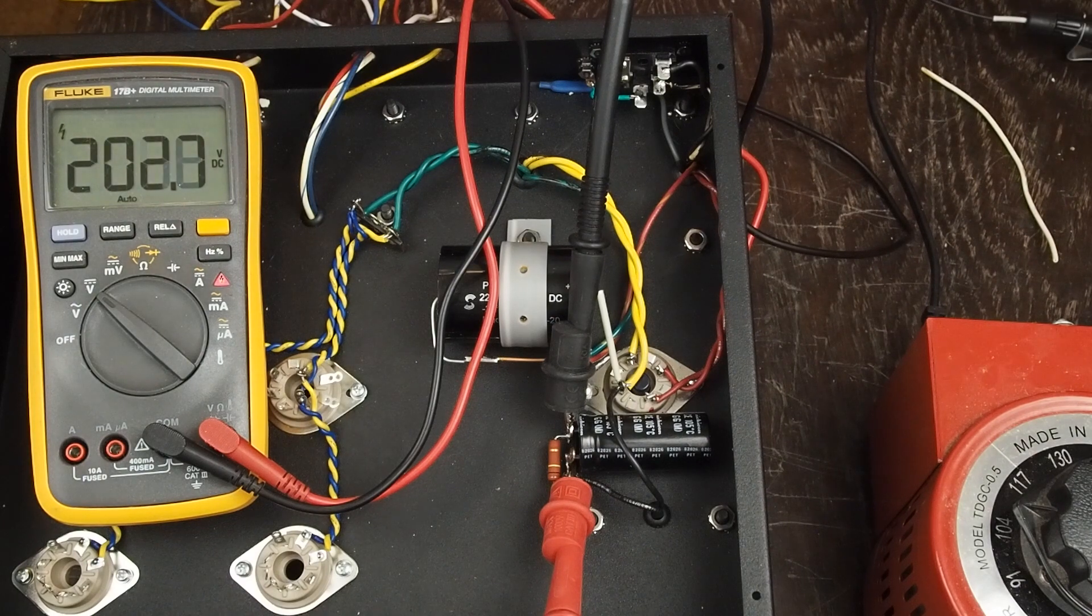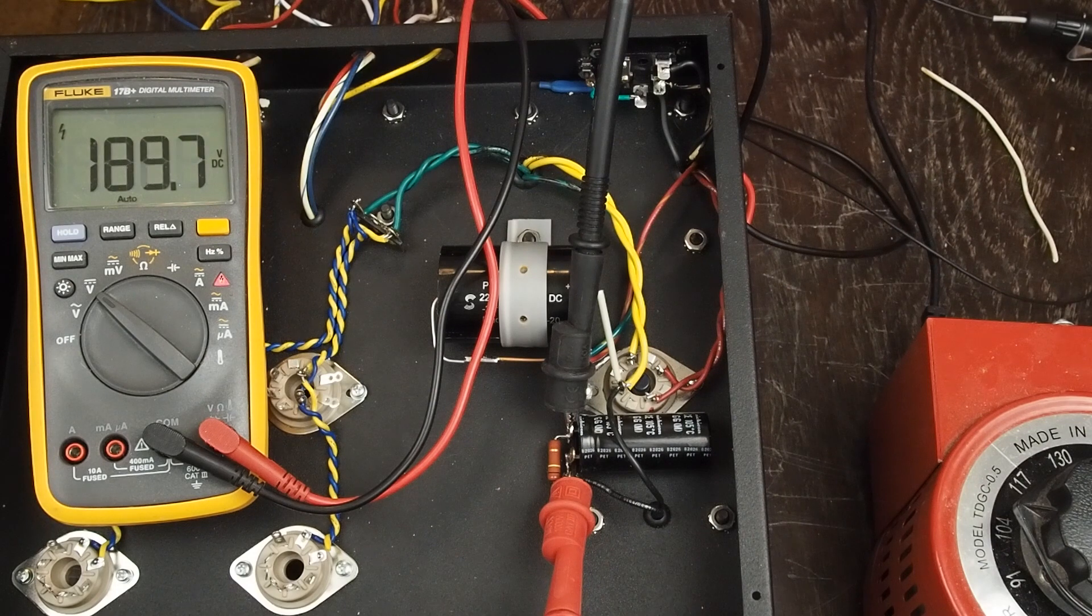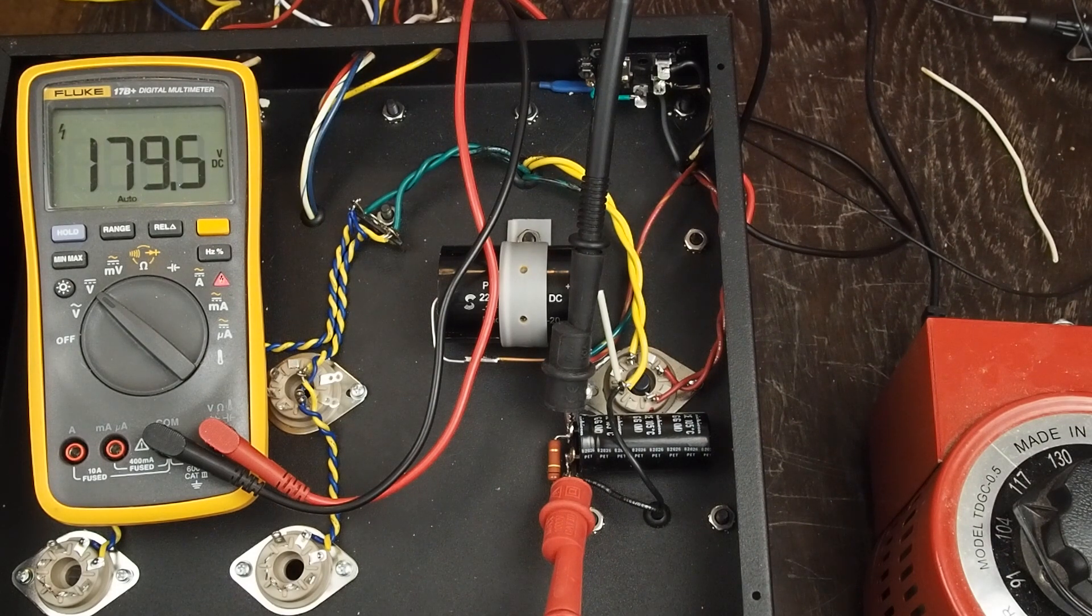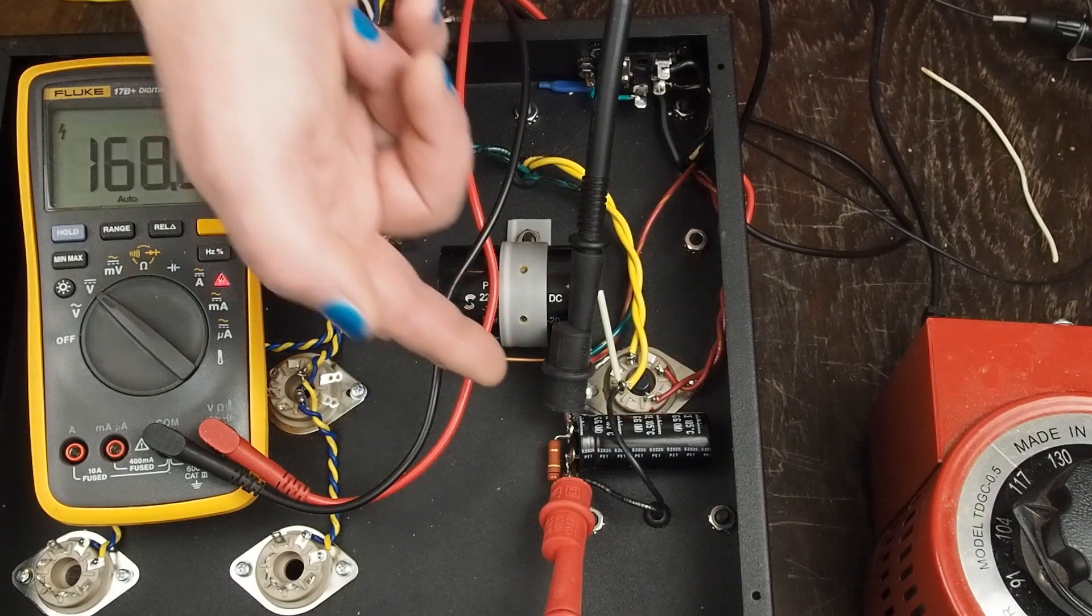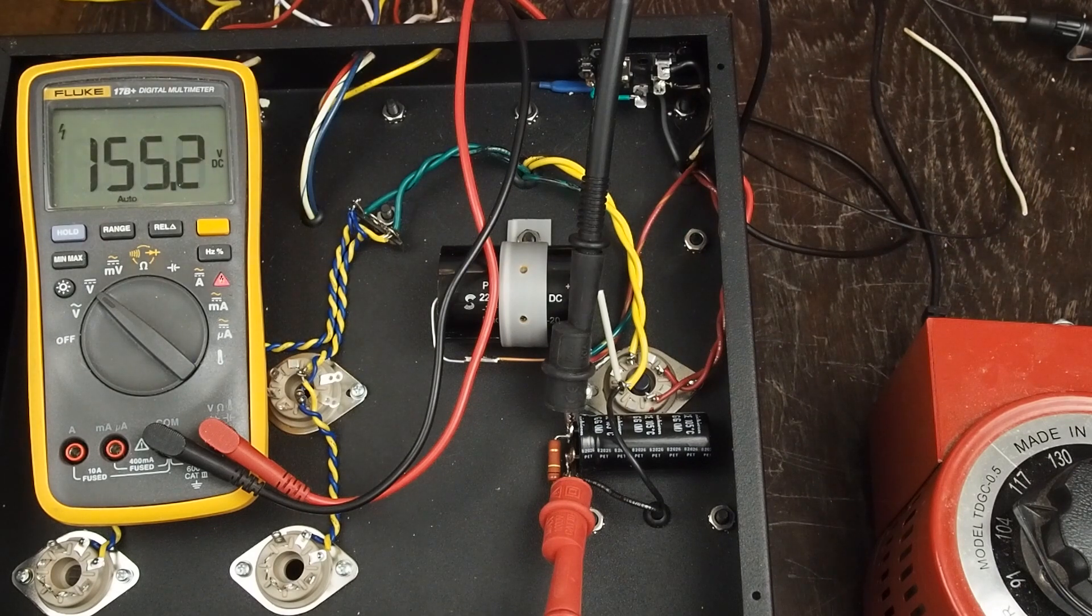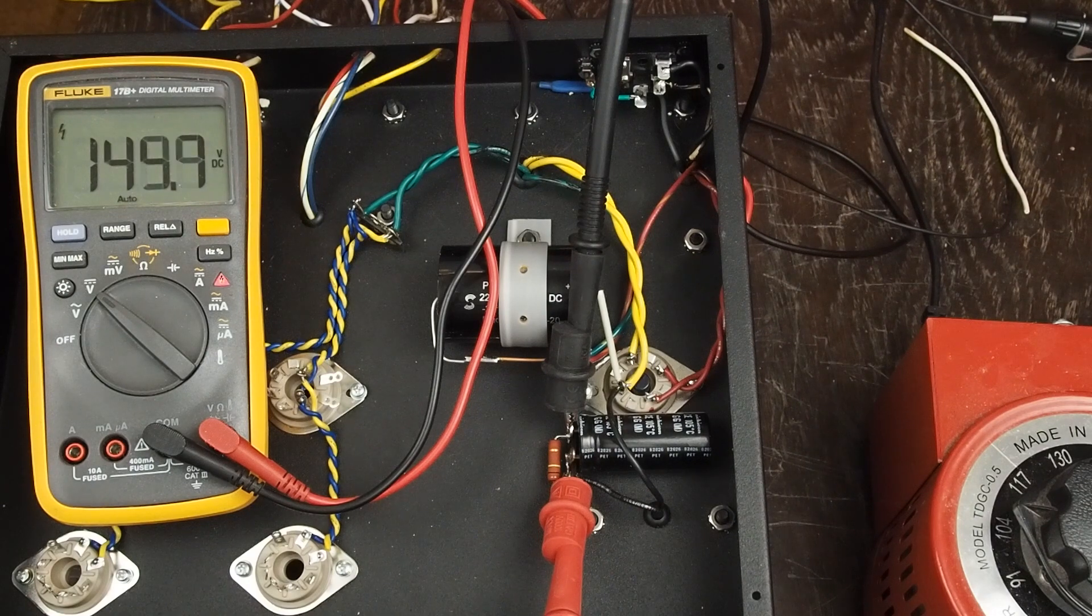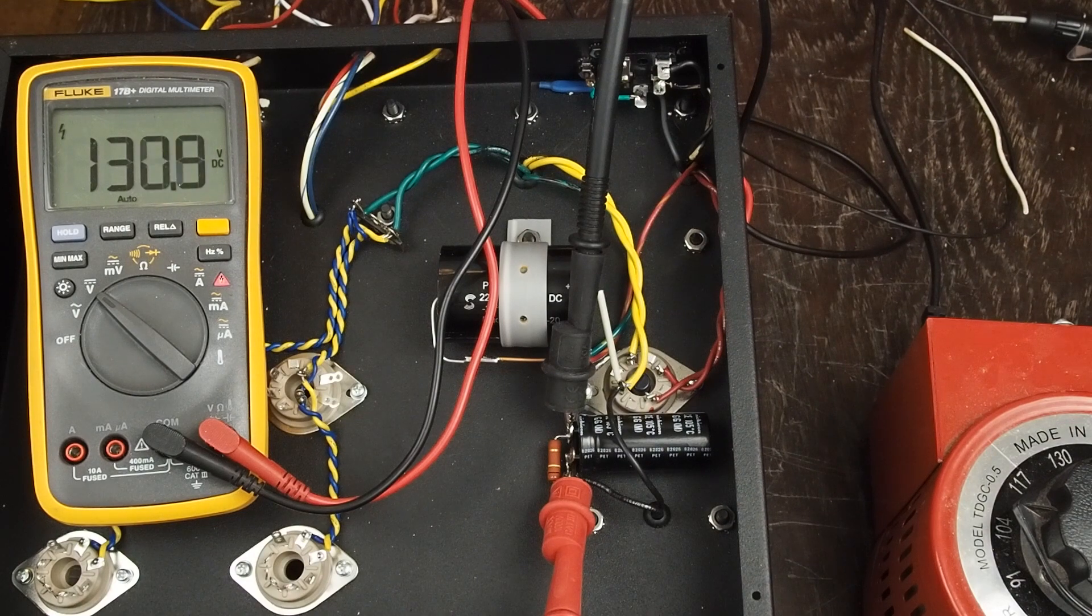So again, be careful guys. Understand that these things are dangerous to work on if you're not paying attention. This is also showing you the value of having this bleeder resistor in here that we put down here, that without that it would still be sitting up over 400 volts and it might take 45 minutes or an hour for the voltage to come down to a safe level.